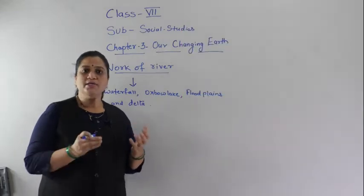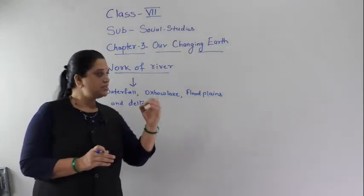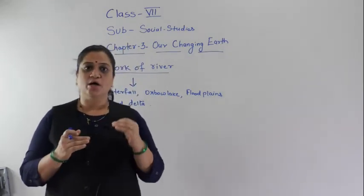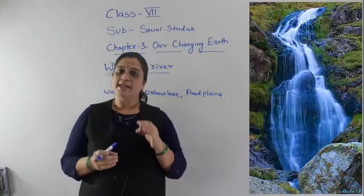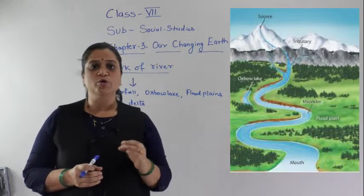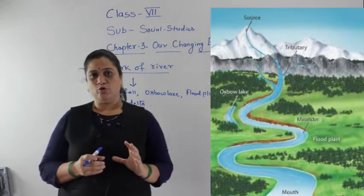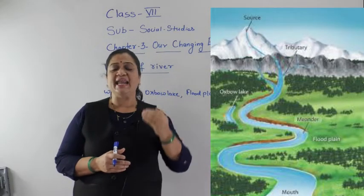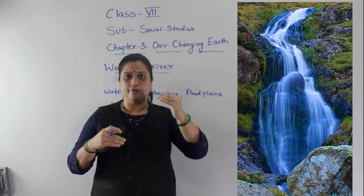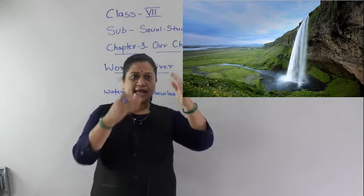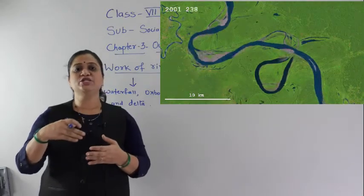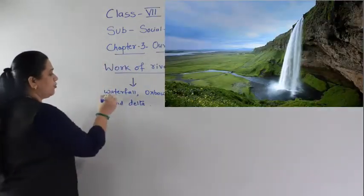How does the river form these landforms? Rivers flow in three courses: the upper course, the middle course, and the lower course. When the river originates from the glacier, that is when it starts from the mountain, it has great force. It falls from the mountain, comes through the valleys, and when it enters the plain, it changes shape. Let us first see the waterfall.